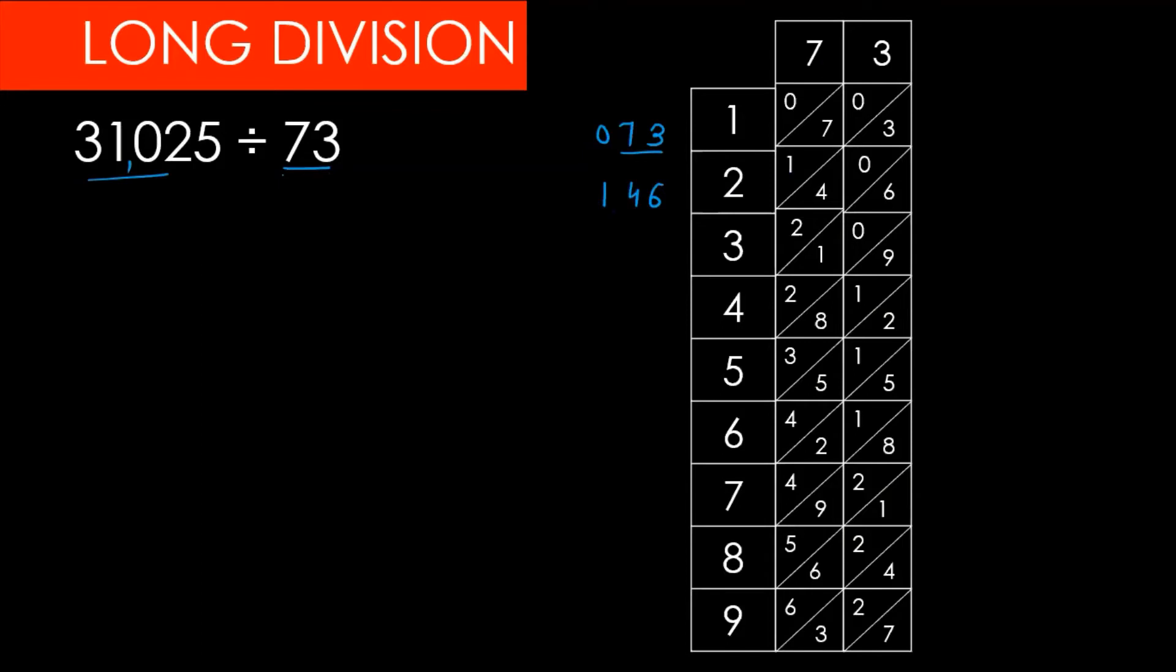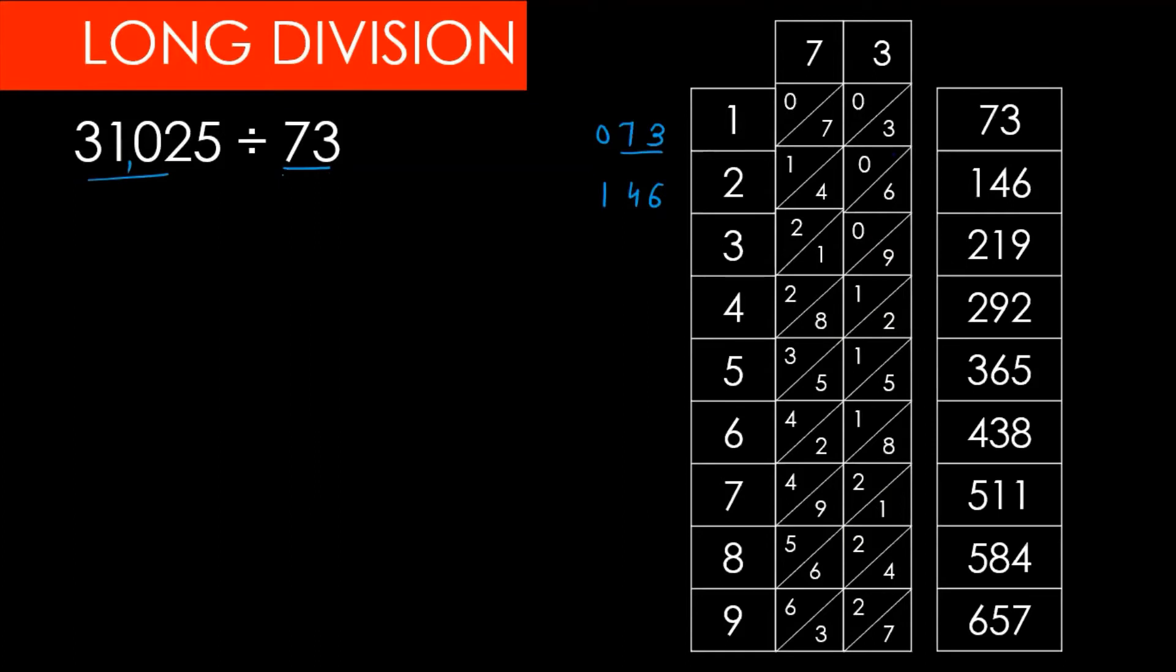Continuing the table through 9 times 73, which equals 657. Now we look at 310 from our dividend 31,025. We find that 310 falls between 292 (4 times 73) and 365 (5 times 73), so we use 4.